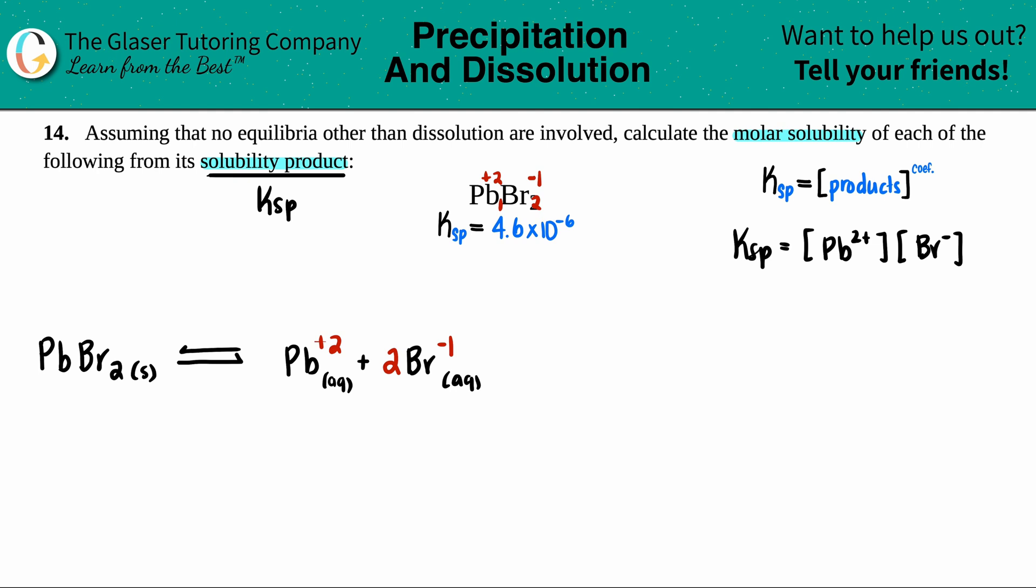we have concentration of Pb2+ times the concentration of the Br-. But just make sure that you're raising it to the coefficients, the big numbers in the front of the balanced equation. Well, there was no number here. That means that there was one lead. So I could raise this to the first, but that's going to be the same number. But since there's a two in front of the bromine, I have to raise the bromine to the second power.